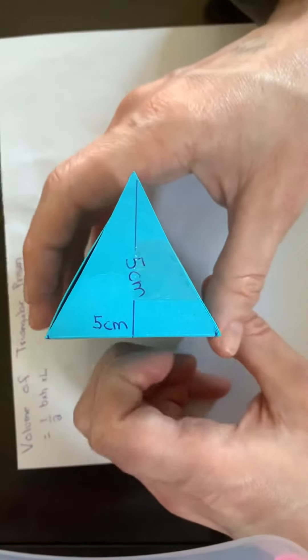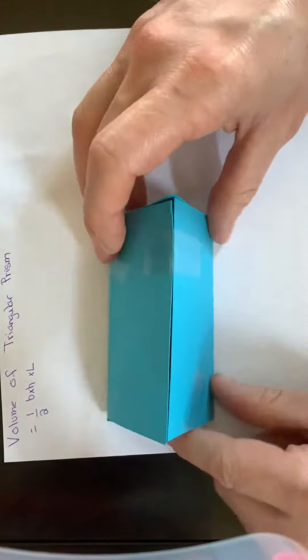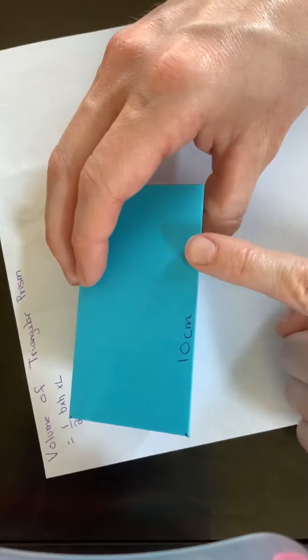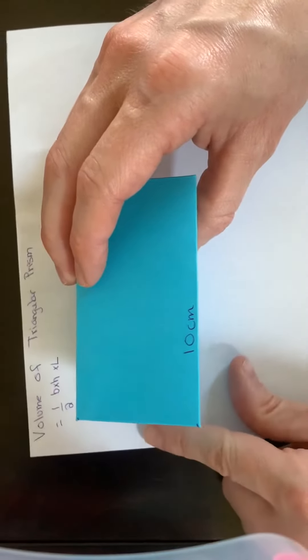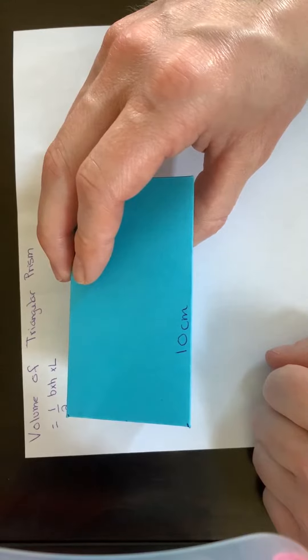The last step when we find volume is to figure out the length. I have the dimension here as 10 centimeters. So 12.5 times 10 is 125 centimeters cubed.